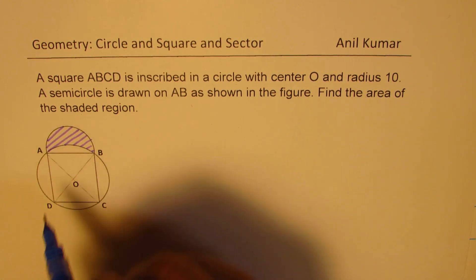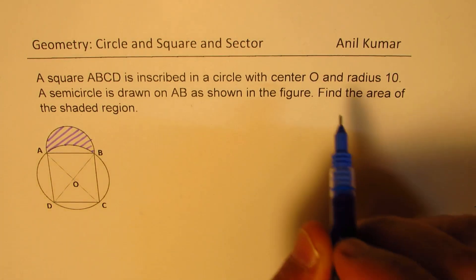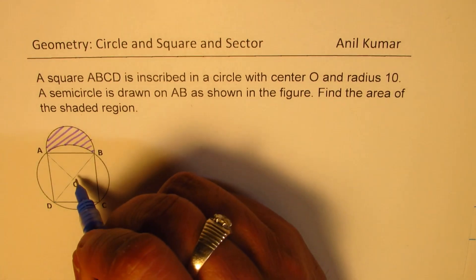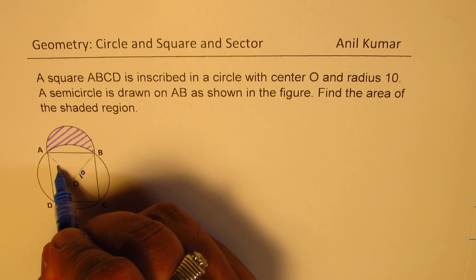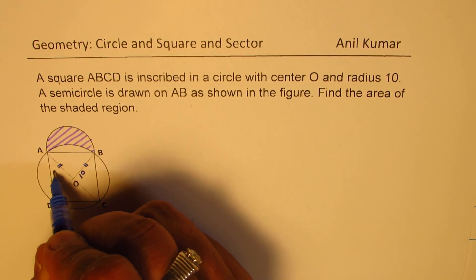As given in this question, the radius is 10. That means OA is 10, right? And OA is also equal to OB, so both are 10.